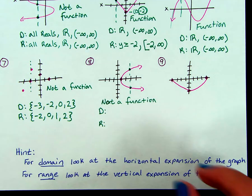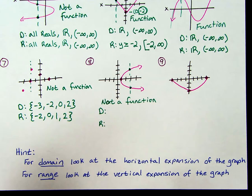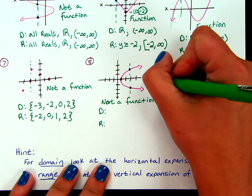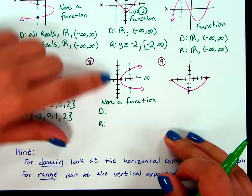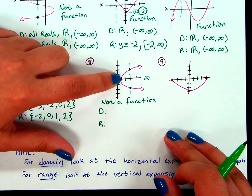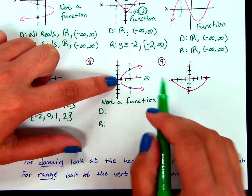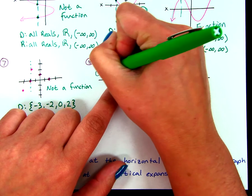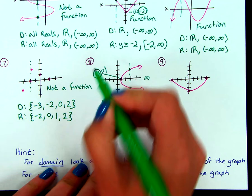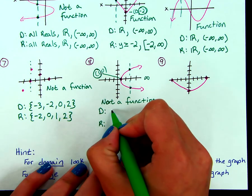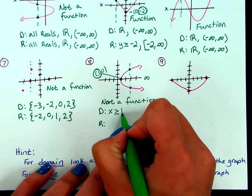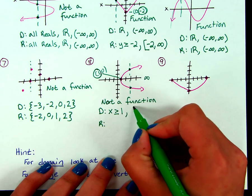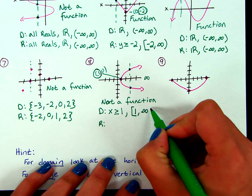Since it's a continuous graph, we're going to have some type of inequality. For domain, we're looking at whether our graph is expanding to the right. On both sides of our graph it's expanding towards positive infinity on the x's, but there's no graph back here, so it's stopping at this point. That coordinate is 1, 0. Since we only care about the x value for domain, all of our x's have to be greater than or equal to positive 1. In interval notation, that's a bracket at 1 all the way up to positive infinity with a parenthesis.